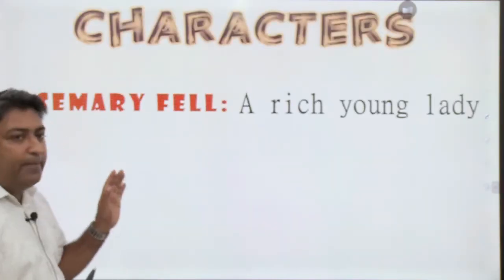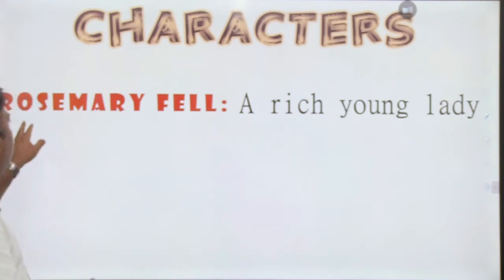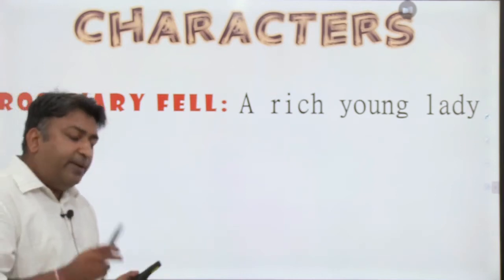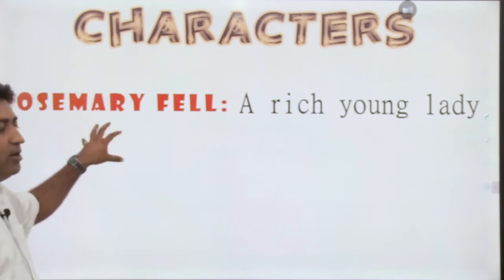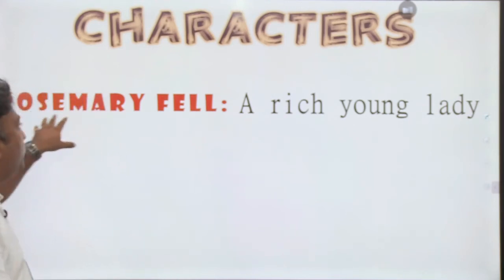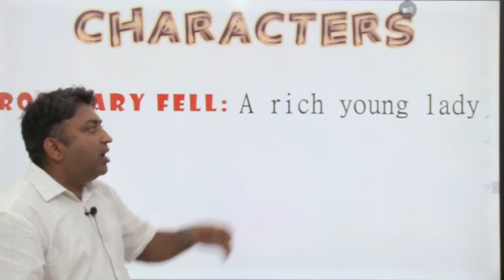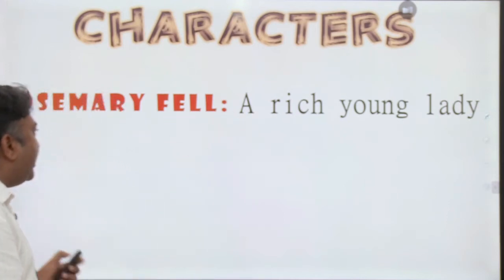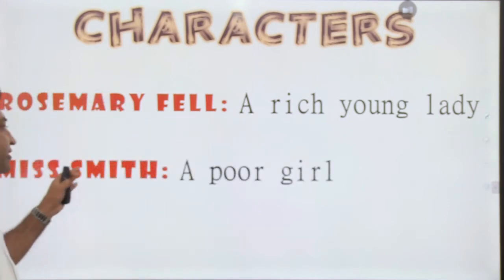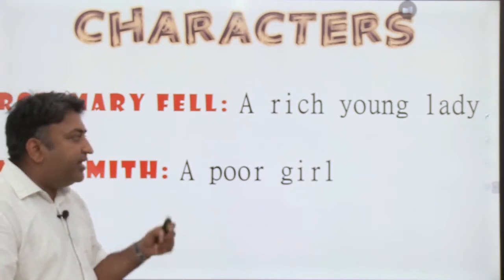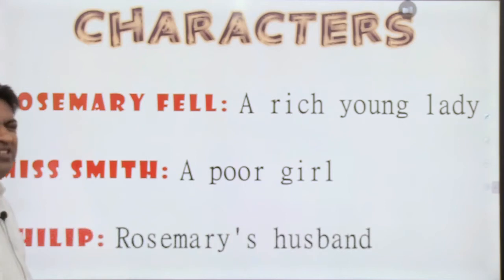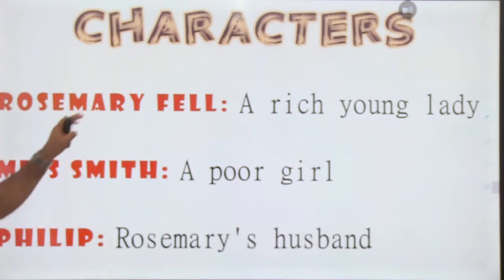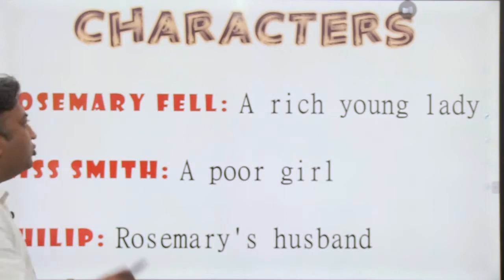The major character from both an examination and story point of view is Rosemary Fell, a rich young lady who is the center of the story. The second important character is Miss Smith, a poor girl — there is a chance encounter between these two. The third character, almost a side character, is Philip, who is Rosemary's husband.